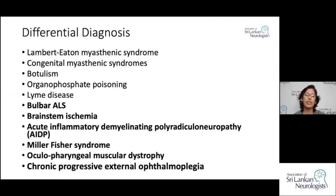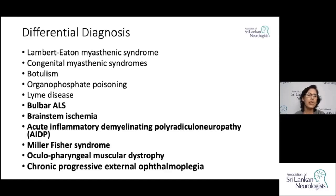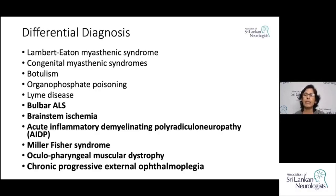In differential diagnosis, bulbar-onset ALS can be confused with myasthenia gravis, but in ALS, eye involvement is rare, the disease steadily progresses without fluctuation or regression, and there is tongue wasting, muscle wasting, and exaggerated reflexes. Brain stem ischemia presenting with dysarthria is another differential. GBS is predominantly a sensorimotor disease — if there is numbness or pain in hands and legs, myasthenia gravis is unlikely.